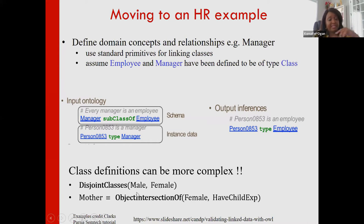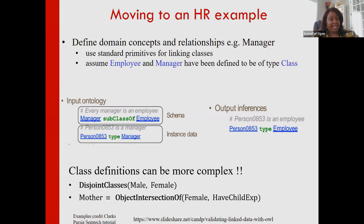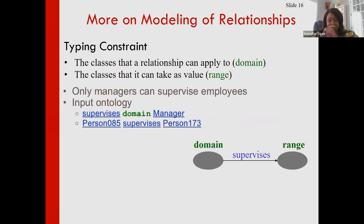For example, I can say that the classes 'male' and 'female' are disjoint — meaning I cannot find a model in which there is somebody who is both male and female. I can create a class 'mother' defined as the intersection of the class of females and the class of things that have children. Each of these primitives has formal axioms for reasoning.